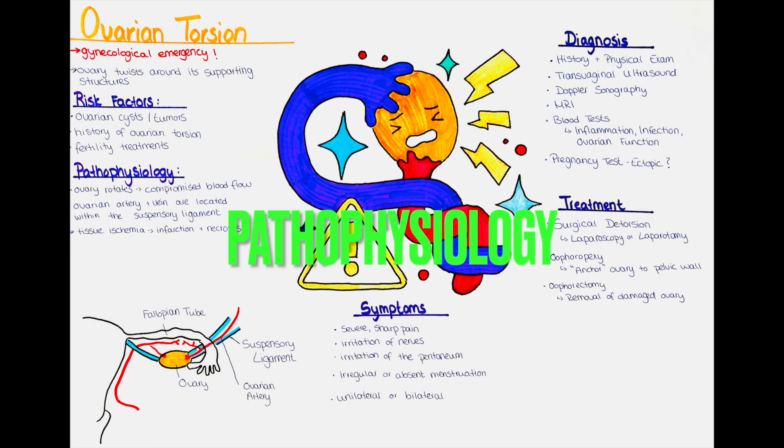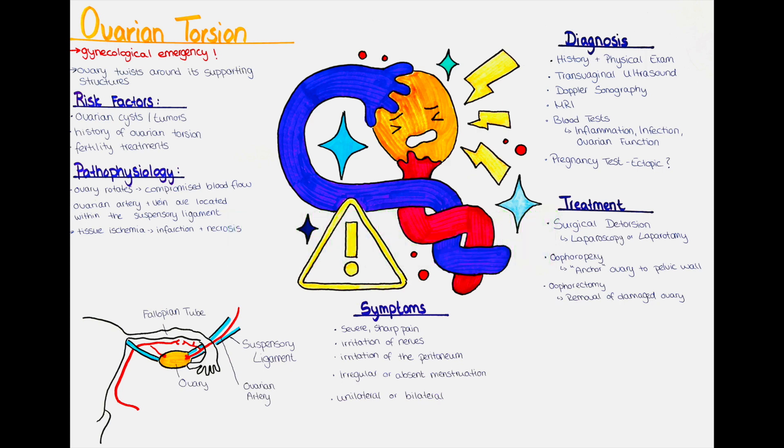What is the pathophysiology of ovarian torsion? Ovarian torsion occurs when the ovary rotates, leading to twisting of the ovarian blood vessels and compromised blood flow. The ovarian artery and vein are located within the suspensory ligament of the ovary, also known as the infundibulopelvic ligament. This ligament attaches the ovary to the lateral pelvic wall.